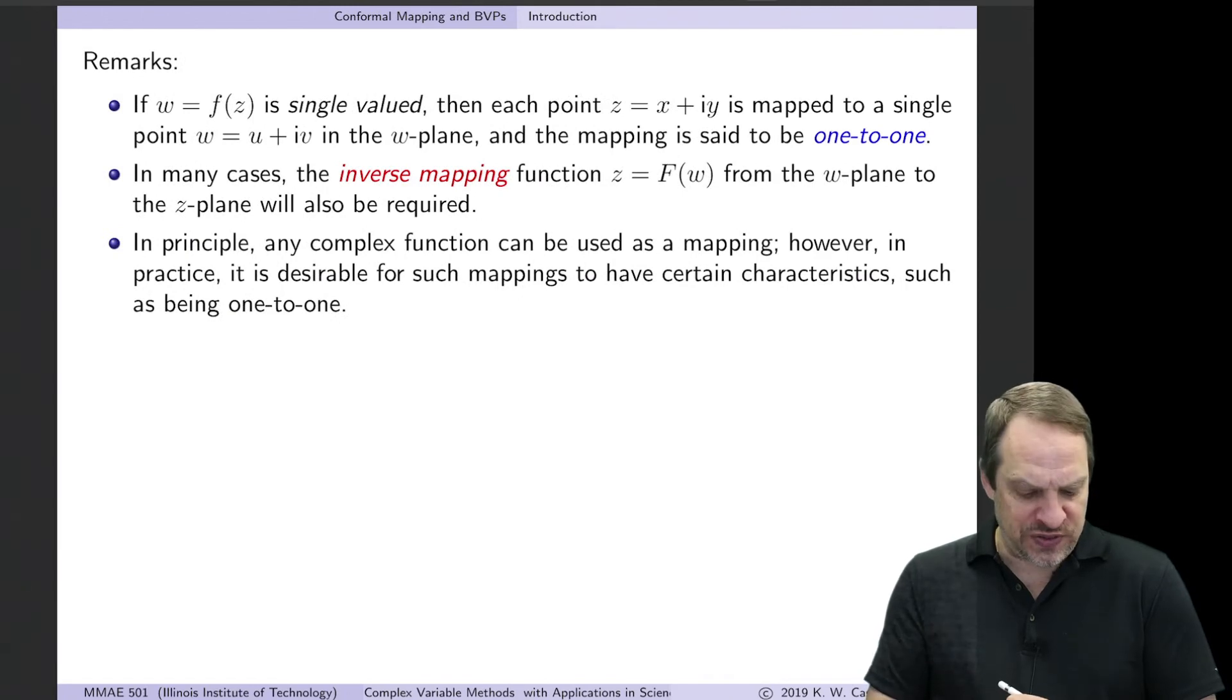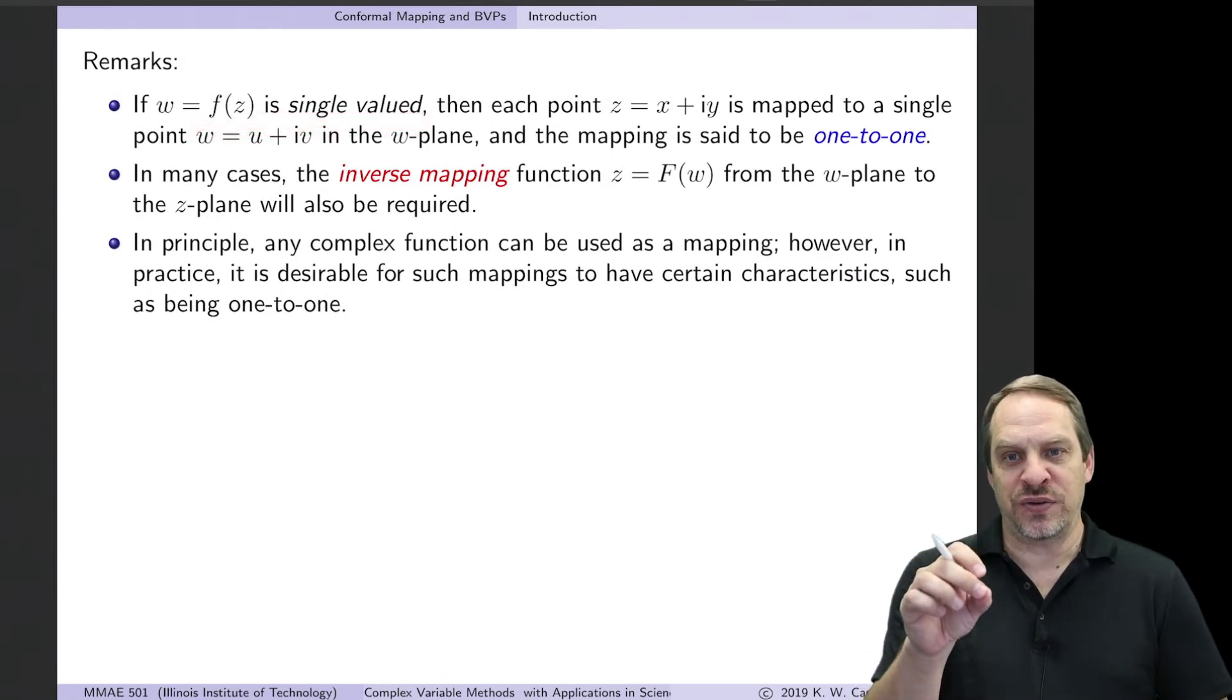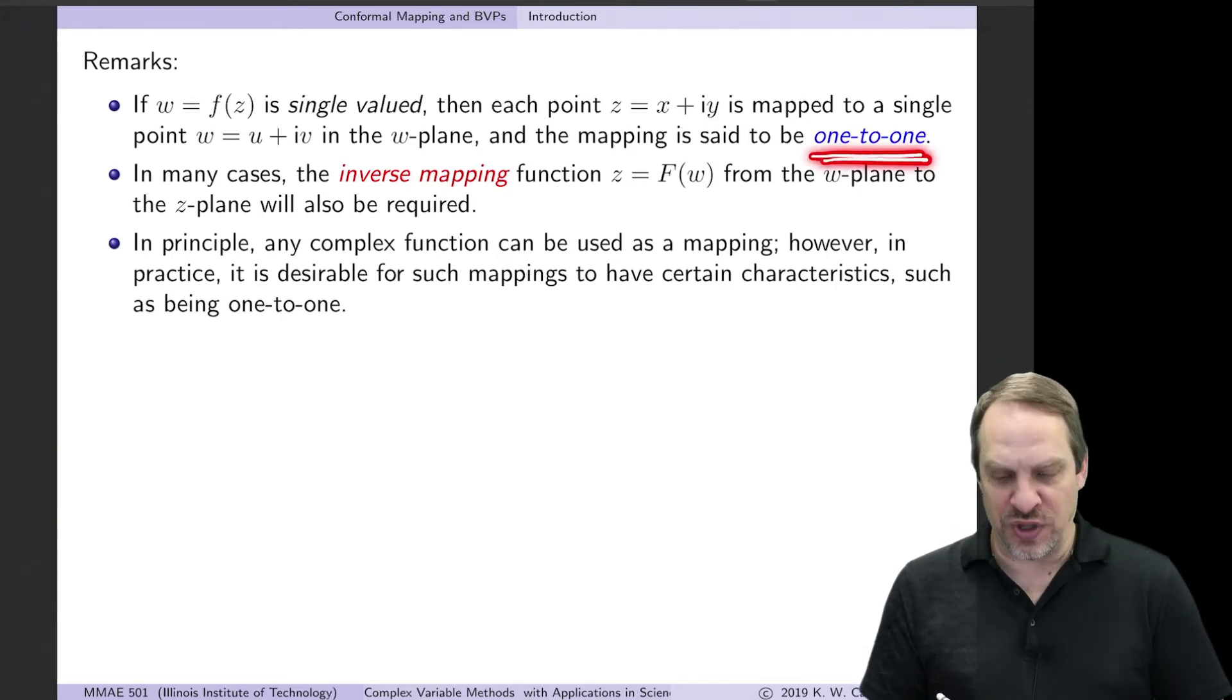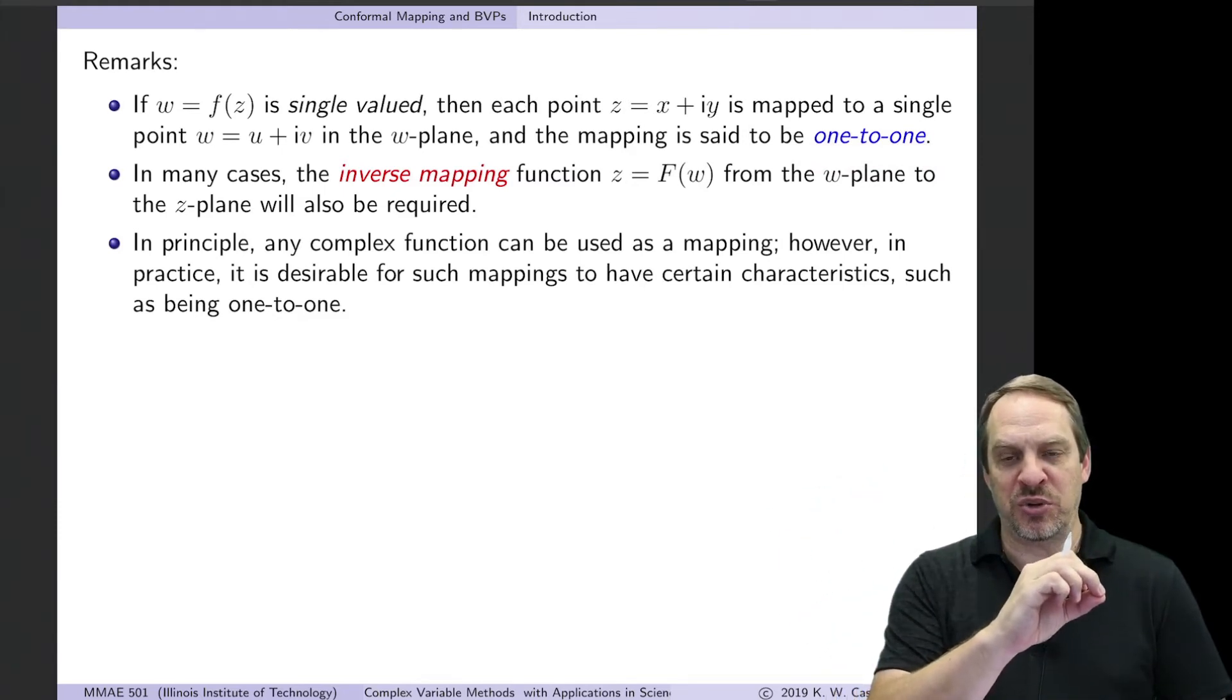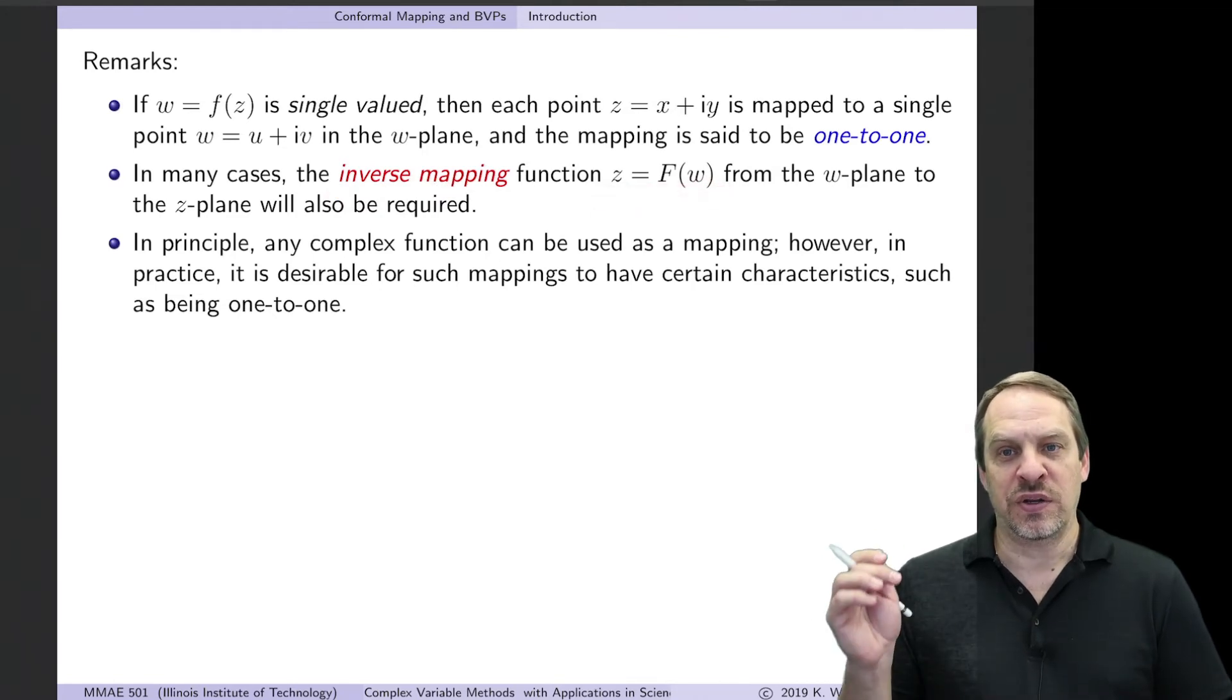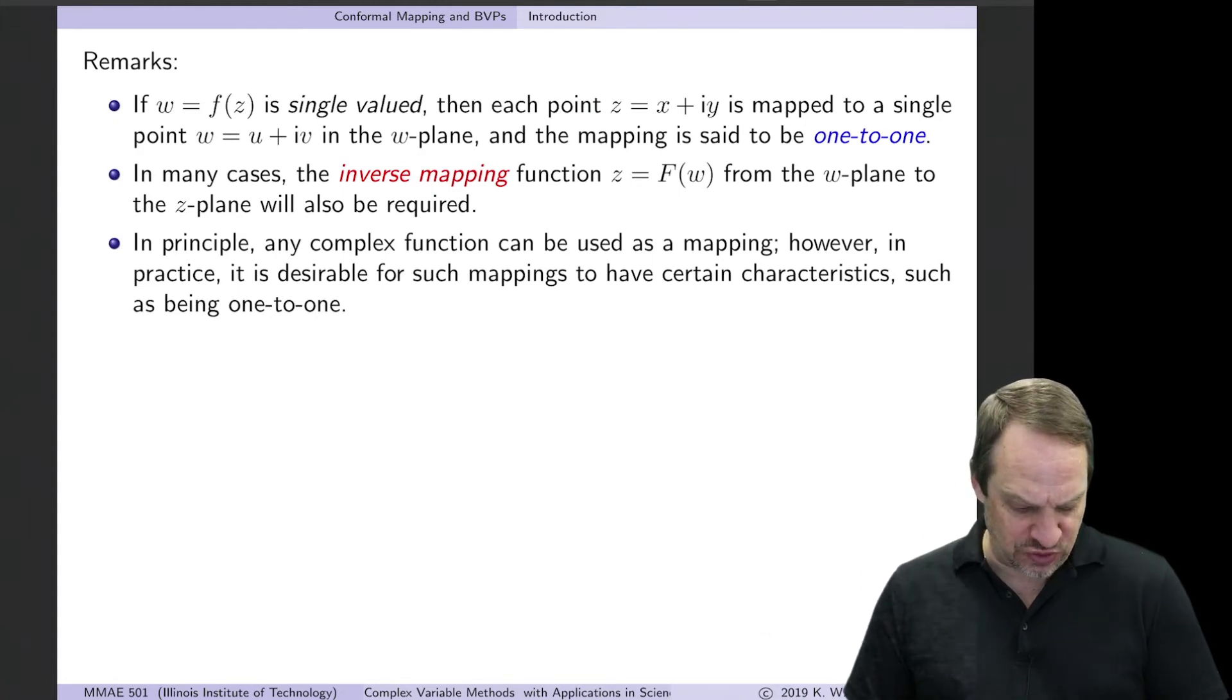Now, if f(z) is single valued, so when I put in one value of z, I only get out a single value of w, then we say the mapping is one-to-one. Each point has a single image point in the w-plane. And of course, that's a desirable characteristic of the mappings that we'll use. We'll also need the inverse mapping. We'll say z = F(w). So little f is from z to w and capital F is from w back to z. We'll need the inverse mapping for reasons that you'll see shortly.